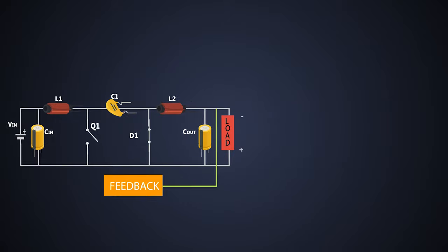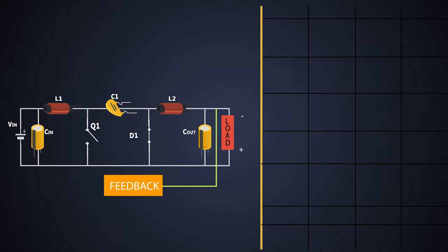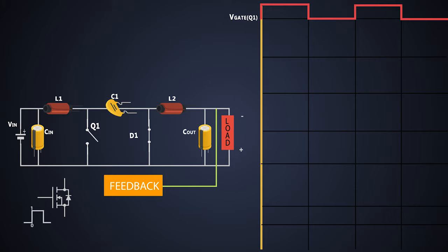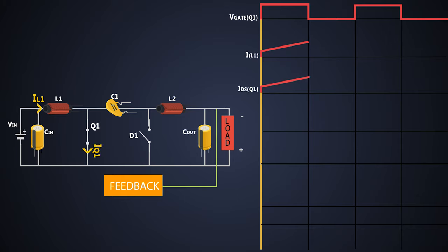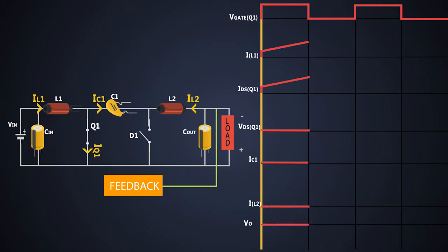Let's understand the working of this converter more thoroughly with the waveforms. Initially, the PWM is given to the MOSFET — let's consider this is an N-channel MOSFET. When the gate pulse is high, the MOSFET turns ON. The current across the inductor starts increasing linearly. Due to inductor L1, the current starts increasing through the MOSFET as well. As the MOSFET is ON, the voltage across the MOSFET is zero. This side of the circuit is totally isolated and there is no current flowing through this part, so the capacitor C1 current, inductor current L2 and the output voltage are zero.